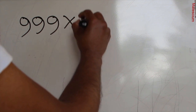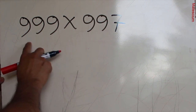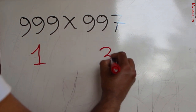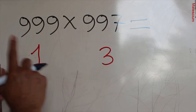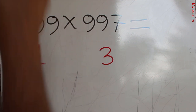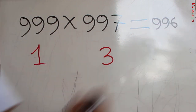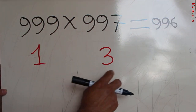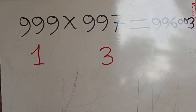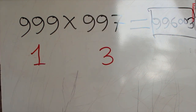Apply the same trick. The nearest larger number is 1000. We need 1 to make 999 into 1000, and we need 3 to make 997 into 1000. Add those in your head: 1 plus 3 is 4. We need 996 plus 4 to make 1000 — write 996 here. Then multiply 3 times 1, which is 3. Make it a 6-digit result by adding two zeros: the answer is 996003.